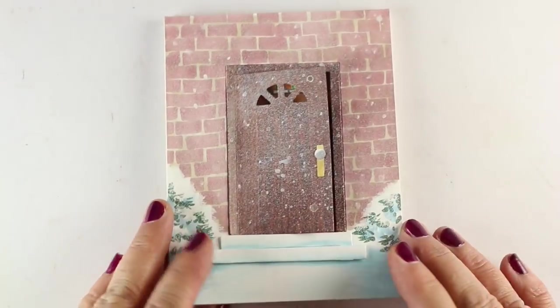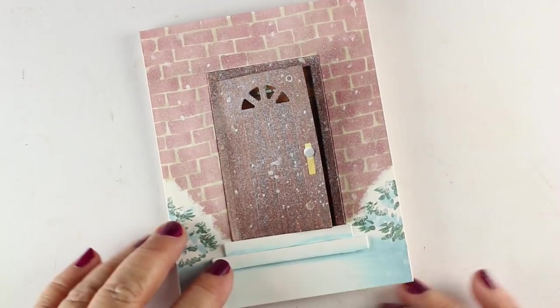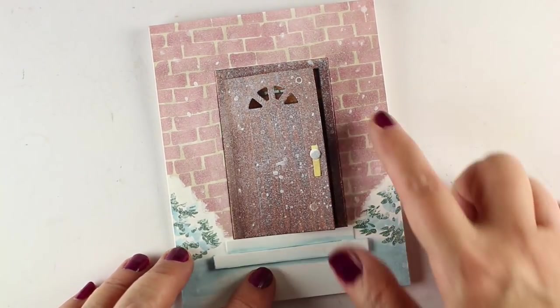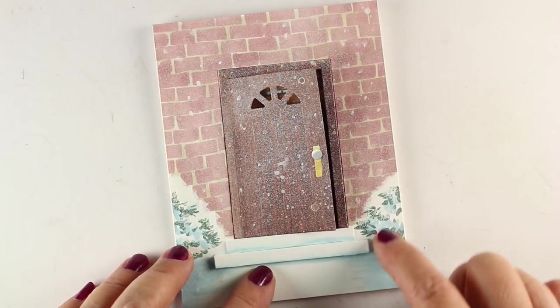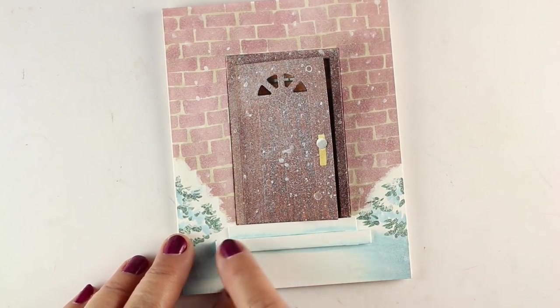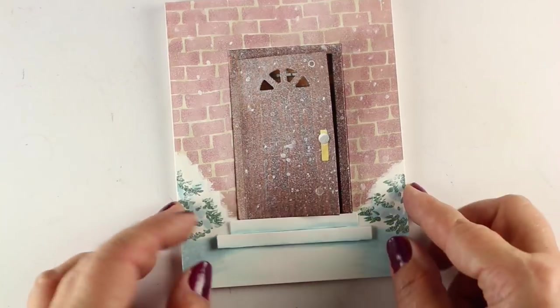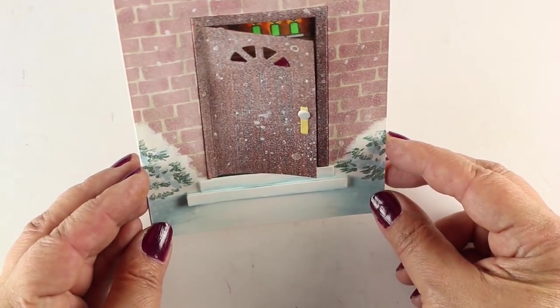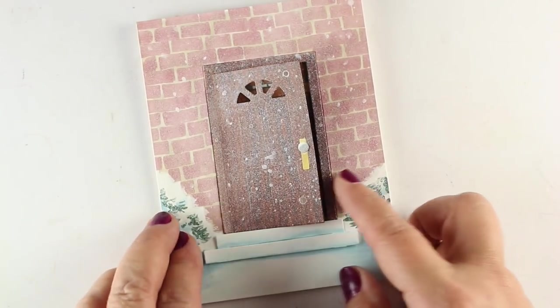The die set has the steps and the doorknob and everything as well as the door. This is a card that most people would make showing the outside of the card and then peeking into the inside of the house and using the steps and gluing the steps on.